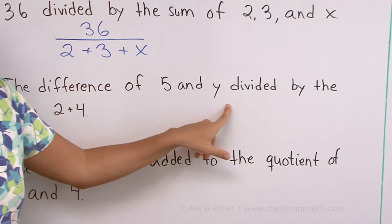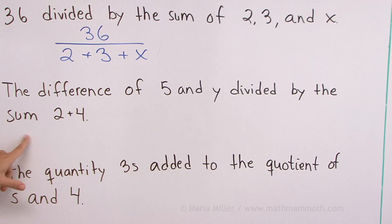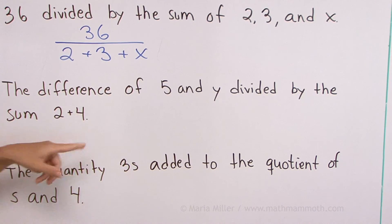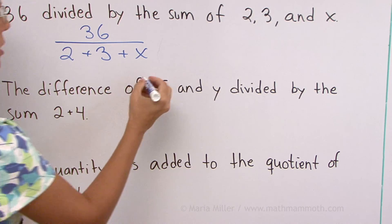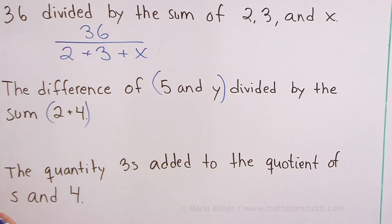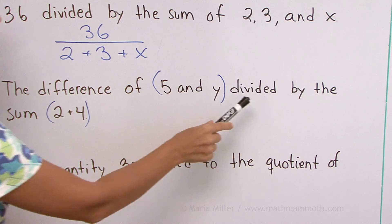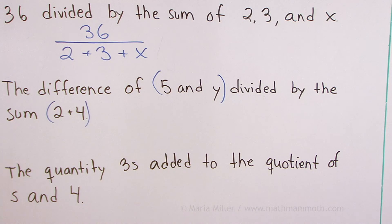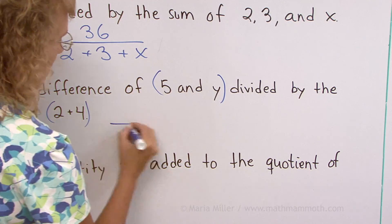The difference of 5 and y divided by the sum, 2 plus 4. Okay. The difference of 5 and y, and then that is divided by the sum, 2 plus 4. Let's use division once again.